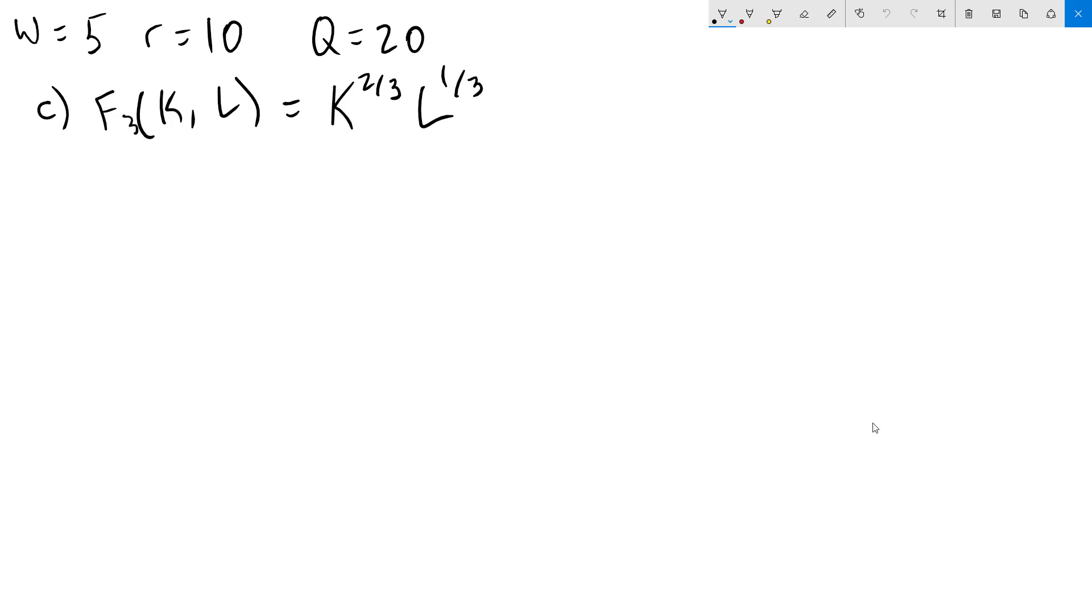As with the linear production function, we're first going to find the marginal product of capital by taking the partial with respect to capital. The 2 thirds comes down. We subtract 1 from that, so k to the 2 thirds minus 1 is negative 1 third. The L to the 1 third comes along.